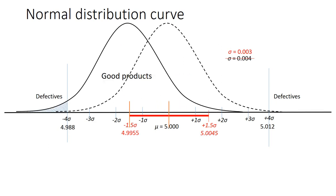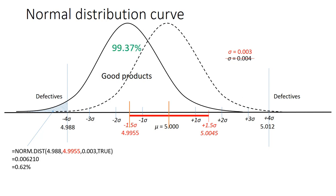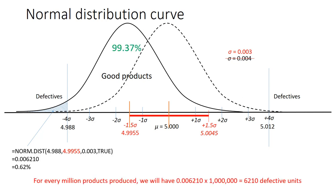Considering the extreme case of the mean shifted to minus 1.5 standard deviations, the proportion of defectives is only 0.62%. Therefore, the proportion of good products is 99.37%, and for every one million products produced, there will be 6,210 defective units. Note that with a standard deviation of 0.003, the specification limits are plus or minus four standard deviations apart, making this a four sigma process.